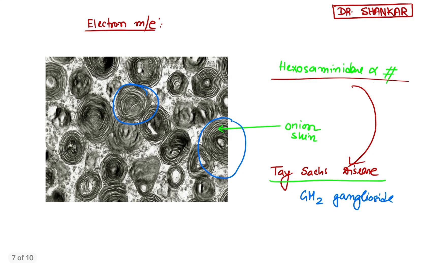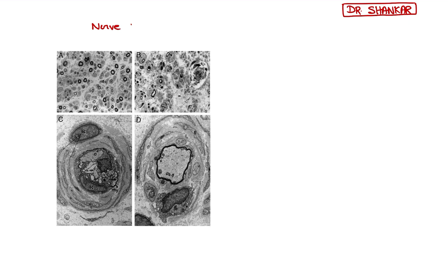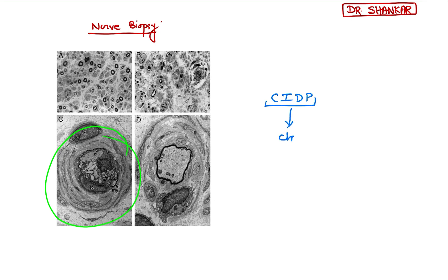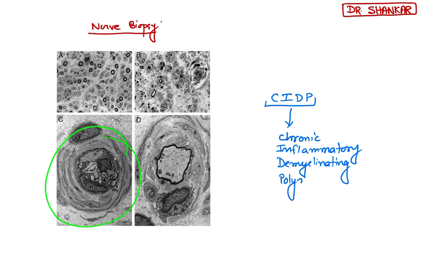Next, coming to another nerve biopsy image showing onion skin appearance. This is suggestive of CIDP — chronic inflammatory demyelinating polyneuropathy. CIDP also shows onion skin appearance in nerve biopsy.